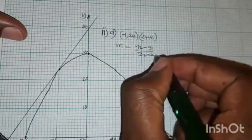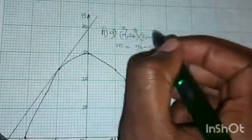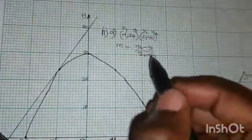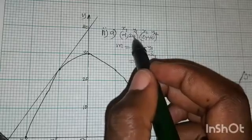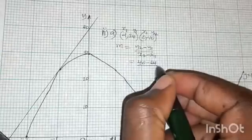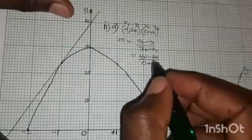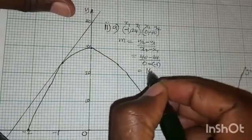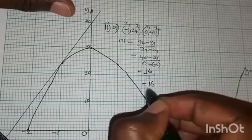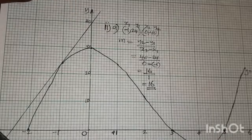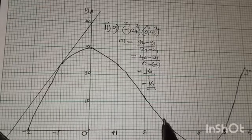Substituting: m = (40 − 24) / (0 − (−1)) = 16 / 1 = 16. So the gradient is 16. This is an estimated gradient — your answer should be close to the true value, but may not be exact since it is just an estimate.